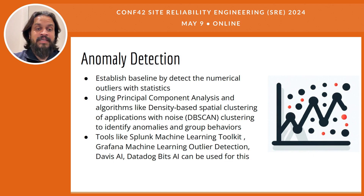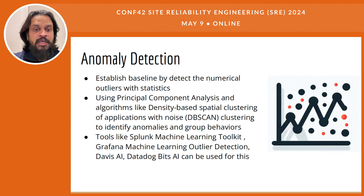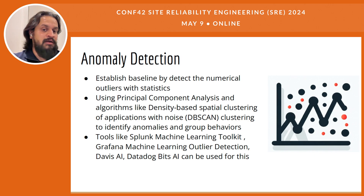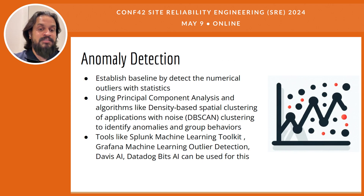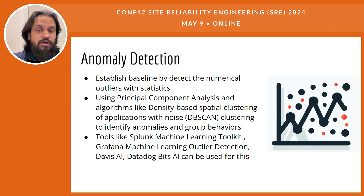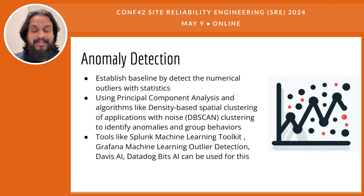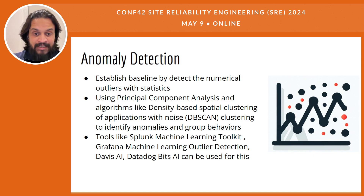Advanced techniques such as Principal Component Analysis (PCA) or Density-Based Spatial Clustering of Applications with Noise (DBSCAN) are employed to further enhance the detection of anomalies and understand group behavior within system data. PCA reduces the dimensionality of the data, highlighting the most significant variations and patterns that are often obscured in high-dimensional data. DBSCAN, on the other hand, excels in identifying clusters of similar data points and distinguishing these from points that do not belong to any cluster. These techniques together allow not only pinpointing unusual activity but also categorizing them into meaningful groups for easier analysis and troubleshooting.